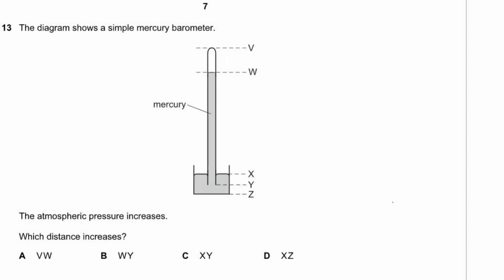Question 13. A mercury barometer — atmospheric pressure increases. When atmospheric pressure increases, X gets pushed further down and W gets pushed further up, so W increases and X decreases. Y and Z remain the same. W and Y get further apart, X and Y get closer together, X and Z get closer together. The distance that increases is W and Y. Answer B.